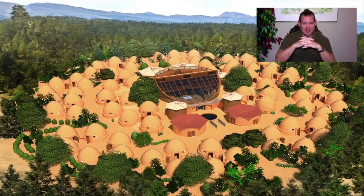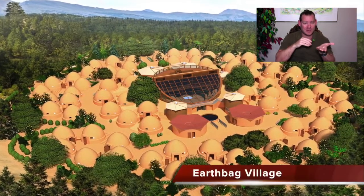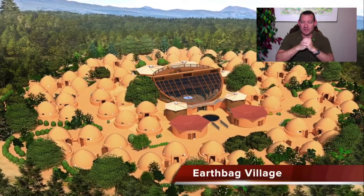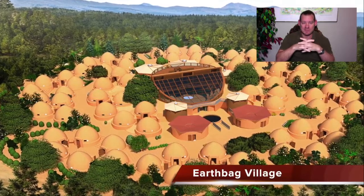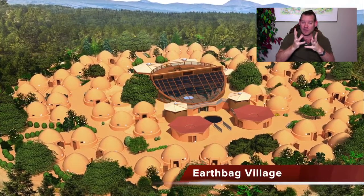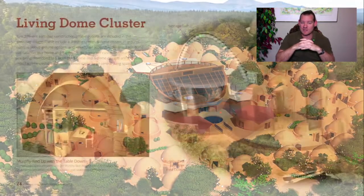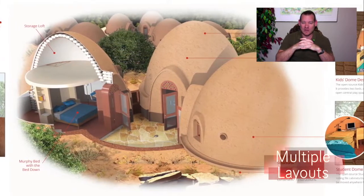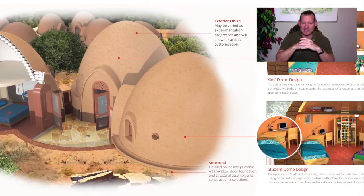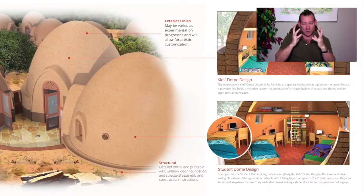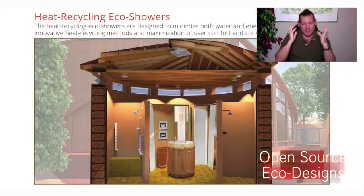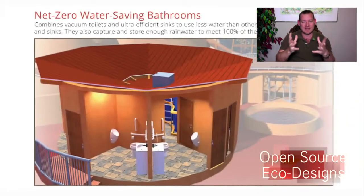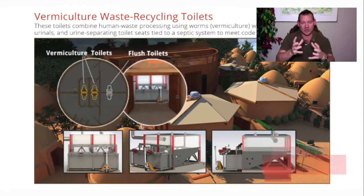If you're not familiar with circular economies, the textbook definition is: a circular economy is an alternative to a traditional linear economy, which is a make-use-dispose economy. In a circular economy, we keep resources in use for as long as possible, extract the maximum value from them whilst in use, then recover and regenerate products and materials at the end of each service life. One Community is applying this through systems of efficiency, recycling, and completely sustainable construction methods.